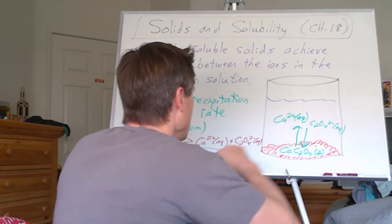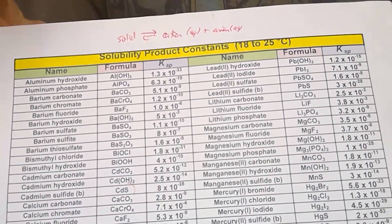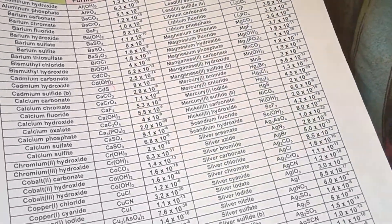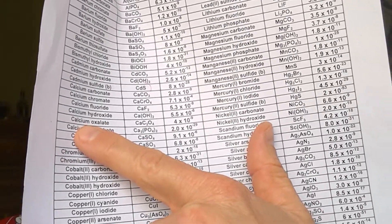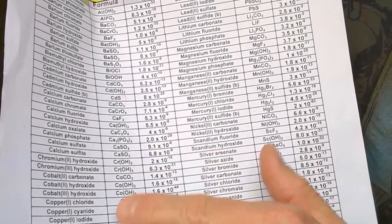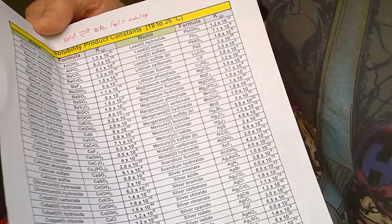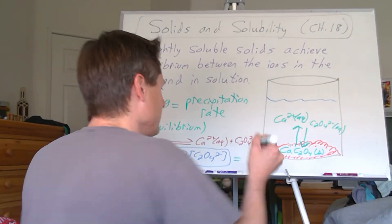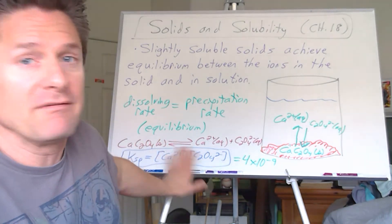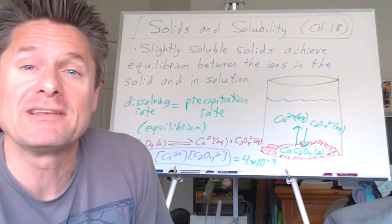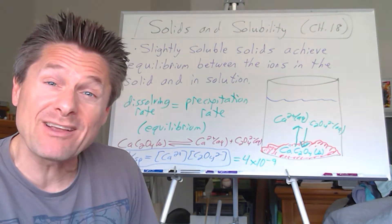Let's look up calcium oxalate in the Ksp table. Go in alphabetical order, find calcium compounds — calcium oxalate is right there. The Ksp is 4 × 10⁻⁹. Look how small these values are — 10⁻²⁸, 10⁻¹³, 10⁻⁴⁴ — so tiny! A Ksp of 4 × 10⁻⁹ means it's mostly solid, with very few ions in solution. That's why we considered them insoluble in intro chemistry. Now we consider them slightly soluble.